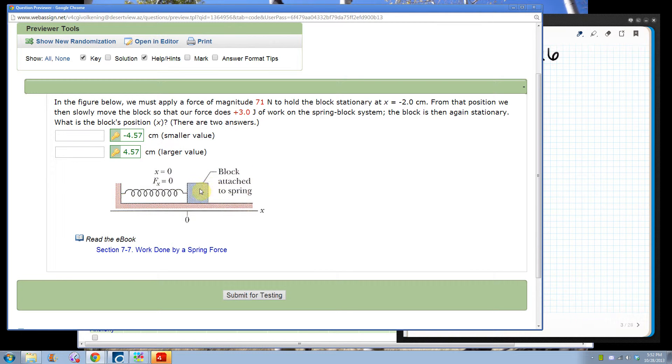From that position, we then slowly move the block so that our force does 3 joules of work on the spring block system. The block is then again stationary. What is the block's position?